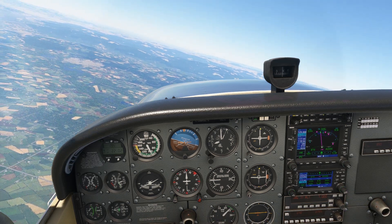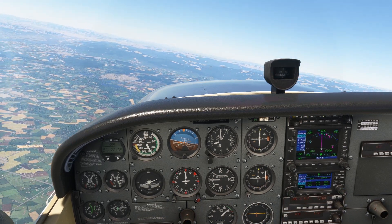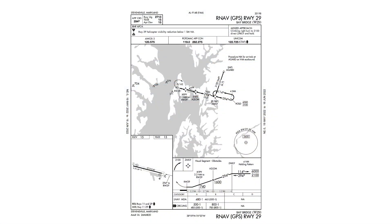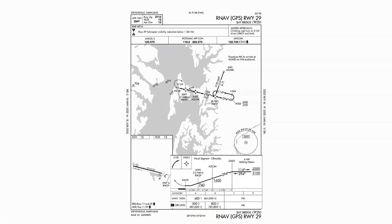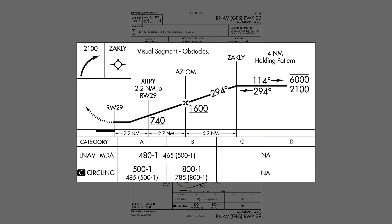But not all GPS approaches incorporate vertical guidance. This one, into Baybridge, Maryland, is an LNAV — lateral navigation — and it doesn't have vertical guidance. Still, a WAAS-enabled unit can produce a simulated glide path for advisory purposes only, to allow us to fly a constant descent on final approach. But without official guidance from the FAA, how is this descent path determined?